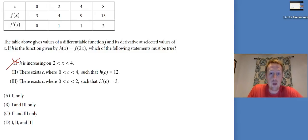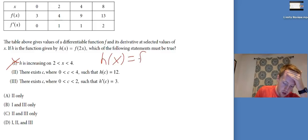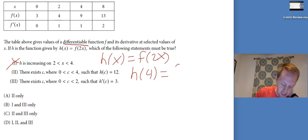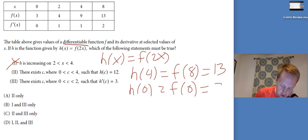There exists C where 0 less than C less than 4 such that H of C equals 12. That's our intermediate value theorem. I want to show the existence of some H value. So remember, H of X is F of 2X. So I know that the function is continuous because it's differentiable. Now, I just need to check H of 4, which is going to be F of 8, based on the definition. H of 4 is equal to F of twice that, which is 13. And then H of 0 is F of twice that, which is still 0, which is 3. Yeah, I buy that. I get 12 at some point on this interval.